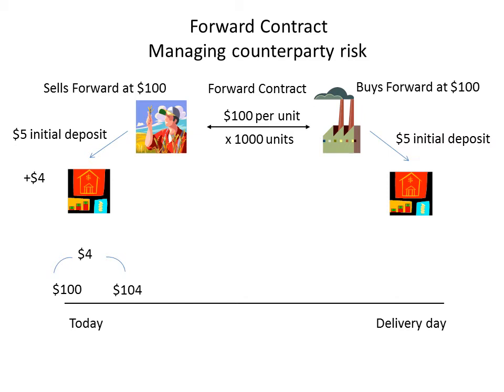However, let's suppose that neither party defaults and we move on along the timeline. Let's suppose now that the forward price for the same delivery day has changed to $98 — that's a change of $6. What happens now is that $4 is returned from the custodian of the farmer to the farmer, but $2 is collected from the custodian of the manufacturer. The idea being that should the manufacturer default now, the farmer would have to go into the market and take out a new forward contract at $98, being disadvantaged $2. But that $2 collected from the custodian of the manufacturer would be transferred to the custodian of the farmer, protecting the farmer's interest.